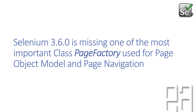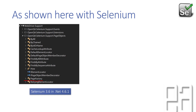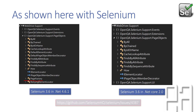But why is it only partially supported? Because Selenium 3.6.0 is missing one of the most important classes, which is PageFactory, used for page object models and page navigations. This is a key class available in Selenium 3.6 for .NET 4.6.1 framework, but the PageFactory class is completely missing in .NET Core 2.0. Without PageFactory, you cannot initialize elements and objects for a class, and you cannot implement any page object model code with .NET Core 2.0.